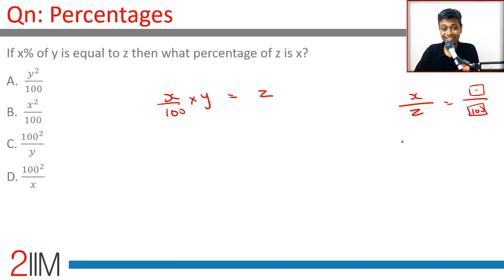So x into y by 100 is z. What do we want to find? We want to find 100 into x by z, 100 into x divided by z.